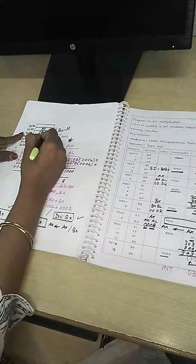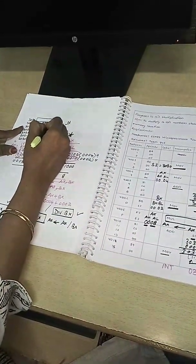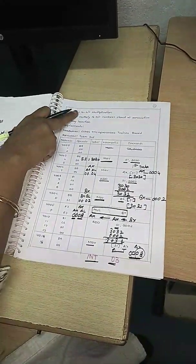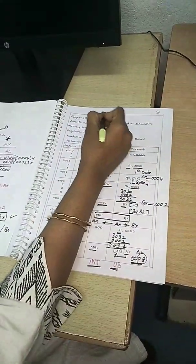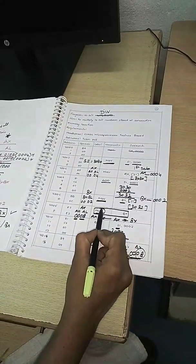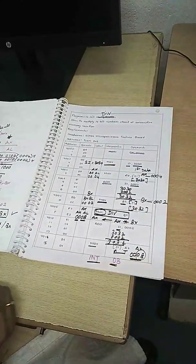You need to understand that first the lower order will sit and then the higher order. Finally, close the program with interrupt 03. INT 03 is used to stop the program, call the program, and come out of the loop. This is the code for 16-bit multiplication. If you want to do 16-bit division, in this particular place you need to change MUL to DIV - that is the only change you need to do. Okay students, thank you.